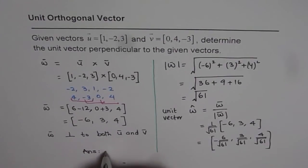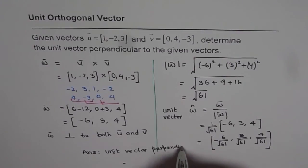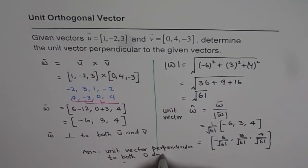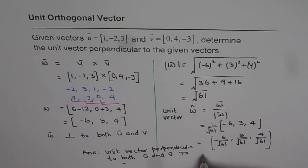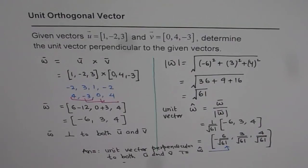We can write down the answer: the unit vector perpendicular to both u and v is that vector w-hat. That is our answer, and that is how we can solve these kinds of questions. I hope it is absolutely clear. To find a unit orthogonal vector to any two vectors, we do the cross multiplication of those two vectors, and then divide the cross product by its magnitude to get the unit vector in a direction perpendicular to both.